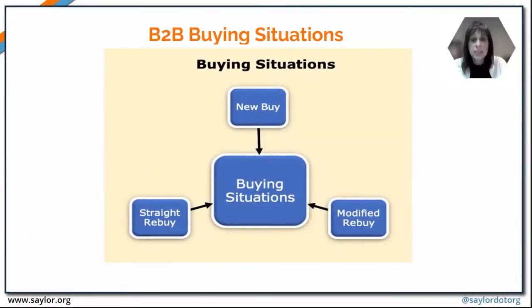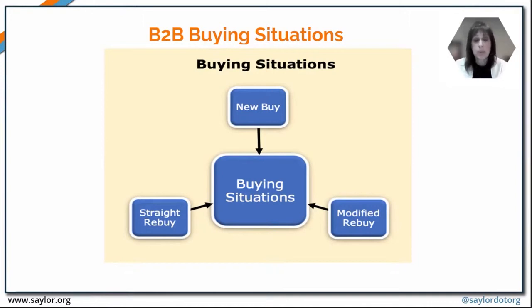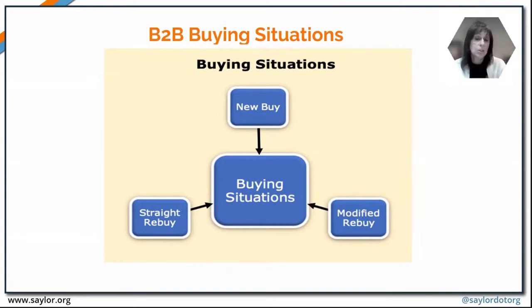There are different kinds of buying situations companies find themselves in. A straight rebuy is when a company buys the same products from the same supplier. Generally that's a pretty quick process as long as there are no problems with previous purchases. Sometimes a company will set these up as automatic renewals, not needing to go through the entire process each time — for example, simply deciding to make the same purchase every month.